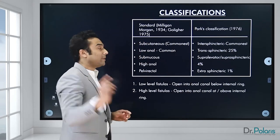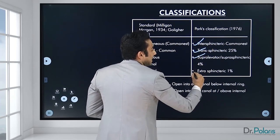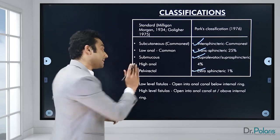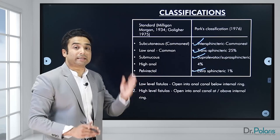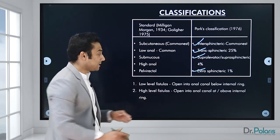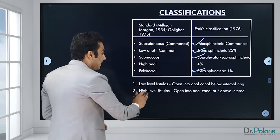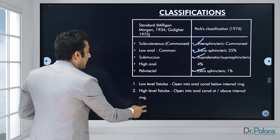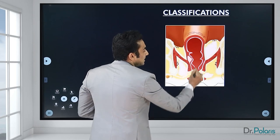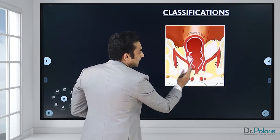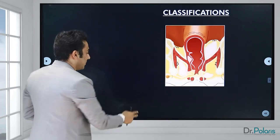Low-level fistulas are those that open into the anal canal below the anorectal ring; high-level fistulas open above the anorectal ring. You can see the different abscesses: the ischiorectal abscess, perianal abscess, pelvic abscess — all forming fistula tracts. Coming to Park's classification, the first type is the intersphincteric fistula, where an abscess in the intersphincteric space forms a tract with an internal opening and an external opening running between the two sphincters from the skin to the anal canal.